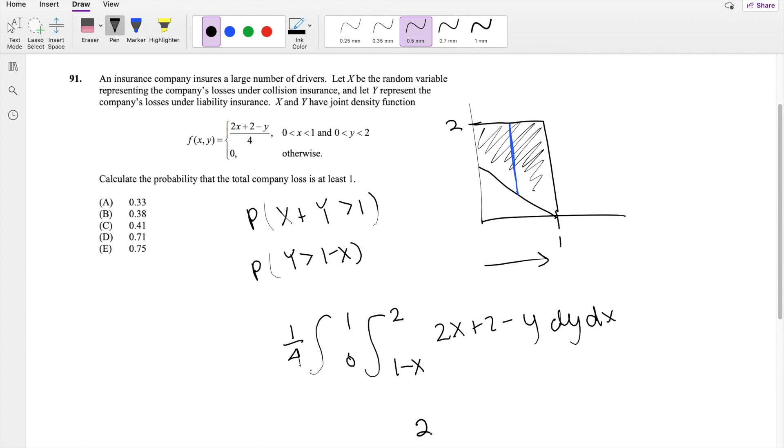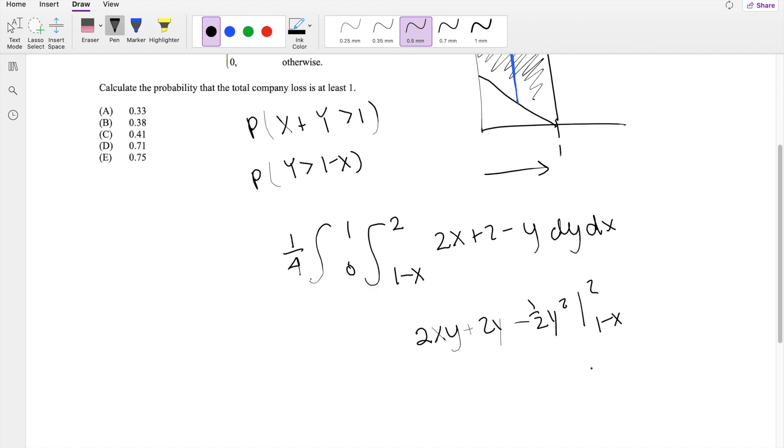If we're integrating with respect to dY, this is just 2XY plus 2Y minus Y squared over 2, going from 2 to 1 minus X for Y. When I plug in 2 for Y here, you get 4X plus 4 minus 2 squared, which is 4, divided by 2, that's just 2.